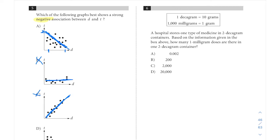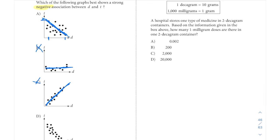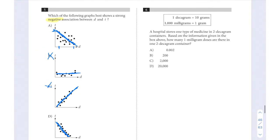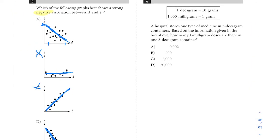And then D also shows a negative relationship kind of like A does. So A and D are both potential options here, and we want to see between those two which one would fit as a better answer choice. So it says here in the question which of the following graphs best shows a strong negative relationship.